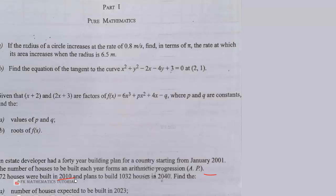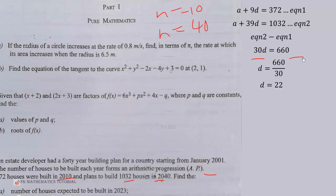So we're given that in 2010, that is when n equals 10, we had 372 houses. So in other words, a plus 9d equals 372. And also in 2040, that is when n equals 40, we will get 1032 houses. So a plus 39d should be equal to 1032. So we solve for d by subtracting equation 1 from equation 2, and dividing through by 30 we get d to be 22.